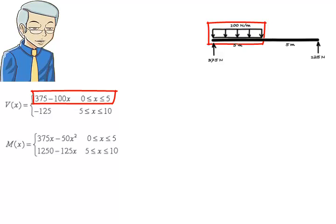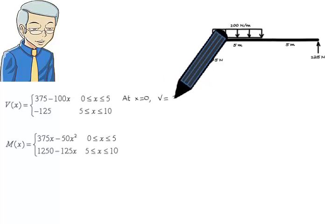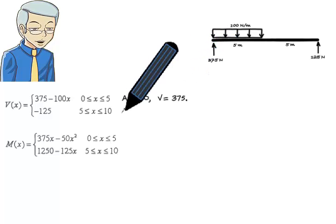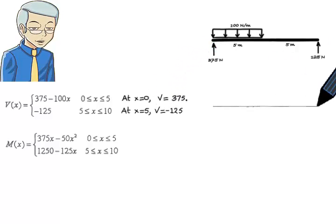This represents a line segment. To draw it, we need two points, say the segment's endpoints. So we evaluate the equation at x equals 0 and x equals 5. At x equals 0, the equation gives us 375. At x equals 5, we get negative 125.